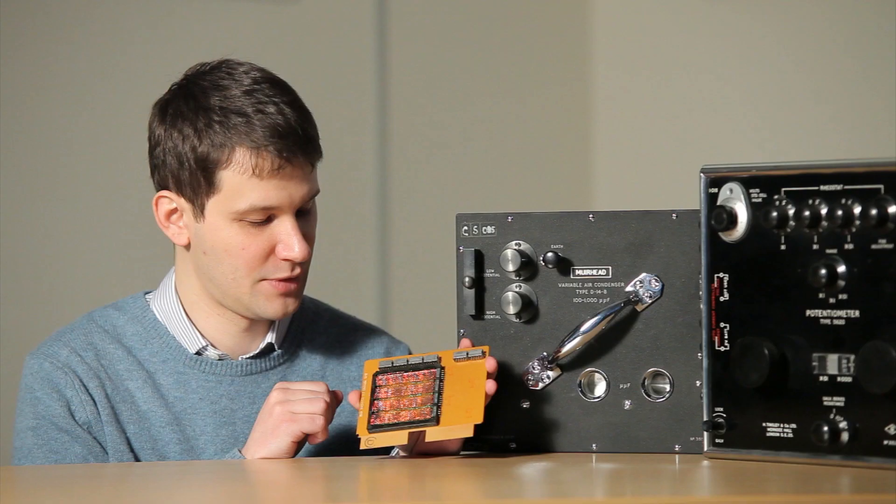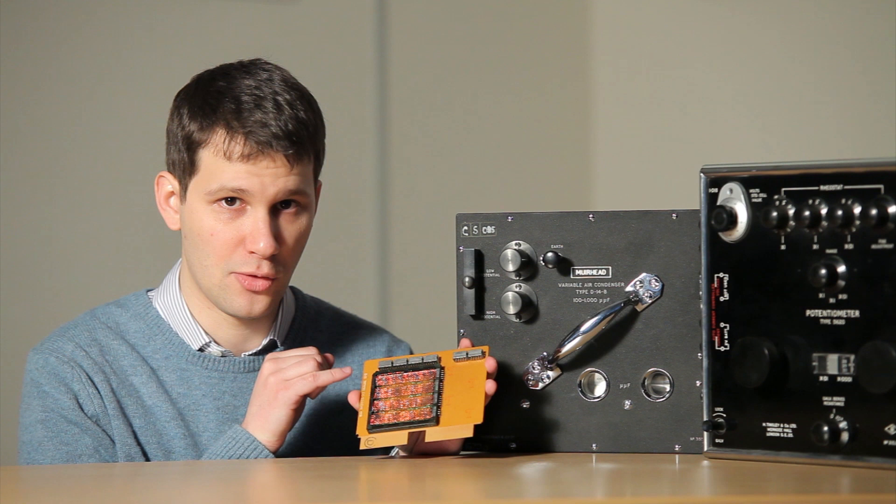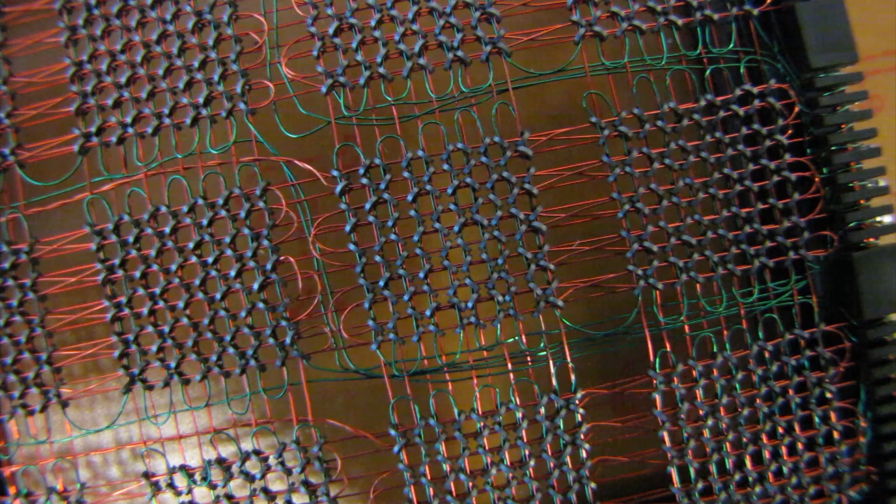A third or sense wire is threaded through all the cores and serves for reading data from memory. First the memory location is selected by passing the current through its row and column wires. A brief electrical pulse is recorded in the sense wire if the bit was yes, but if the bit was no, the sense wire stays silent.